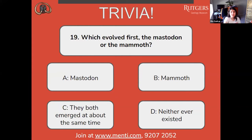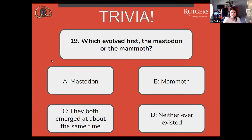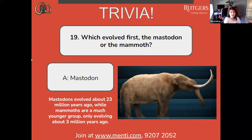Question nineteen: which evolved first, the mastodon or the mammoth? A, the mastodon; B, the mammoth; C, they both emerged at the same time; or D, neither ever existed? The correct answer is A, mastodon. Mastodons evolved around 23 million years ago, while mammoths are a much younger group, only evolving about 3 million years ago.